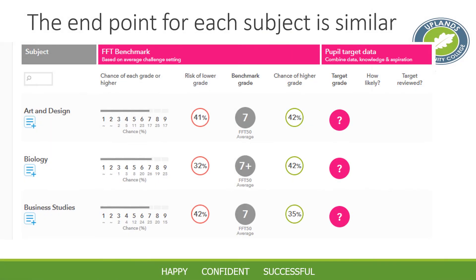The targets for art, biology and business for a single student are actually very similar. Students do on the whole come out with quite similar grades across all of their subjects on a national level. GCSEs are organised so that the difficulty of each GCSE is roughly equivalent. So students are essentially required to get a similar target at the end of each of their subjects.